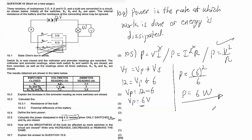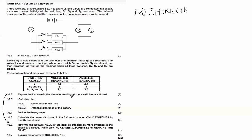Question 10.6 asks: how will the brightness of the bulb be affected as more switches are closed — increase, decrease, or remain the same? The brightness will definitely increase. This is similar to 10.2. The effective resistance decreases as more resistors are added in parallel, leading to an increase in current.